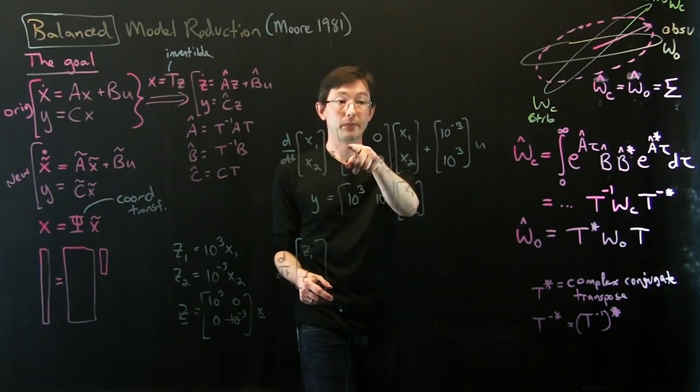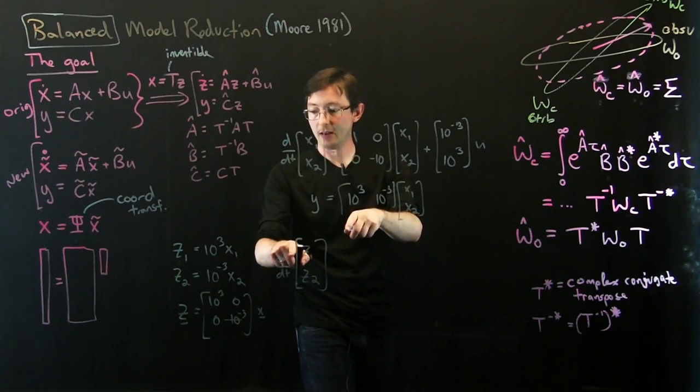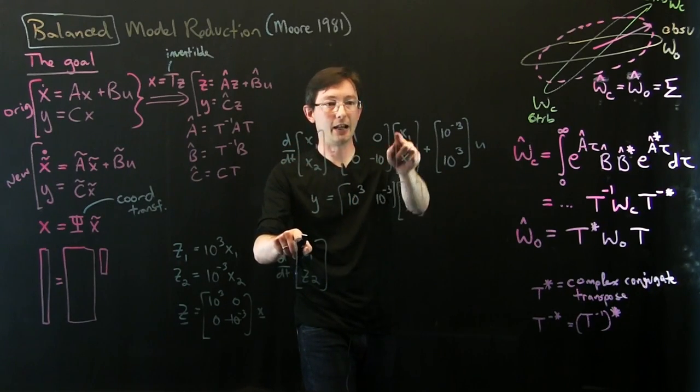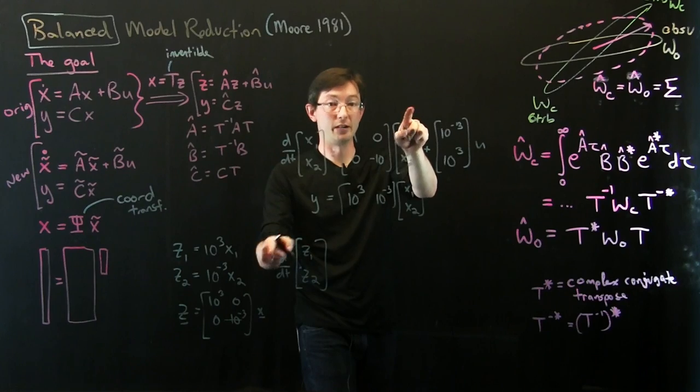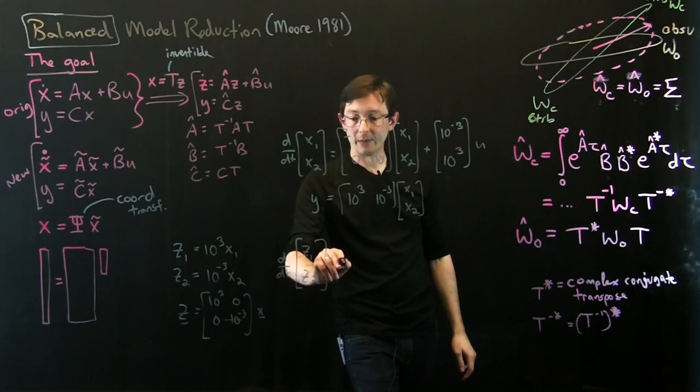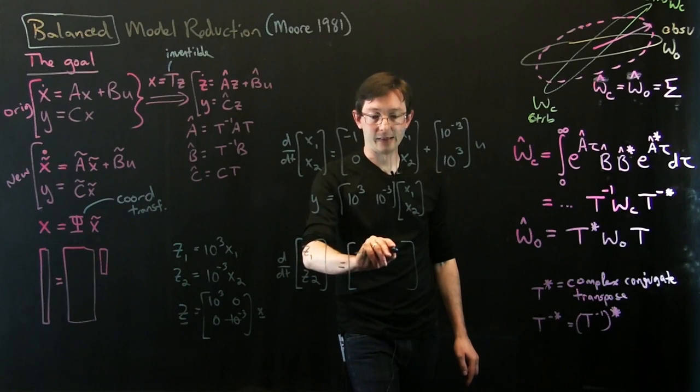d/dt of z1 is... My dynamics don't change, because even though I pick up a 10 to the minus 3, I also have a 10 to the minus 3 over here. So those cancel out. So my dynamics don't change. My A matrix stays exactly the same.